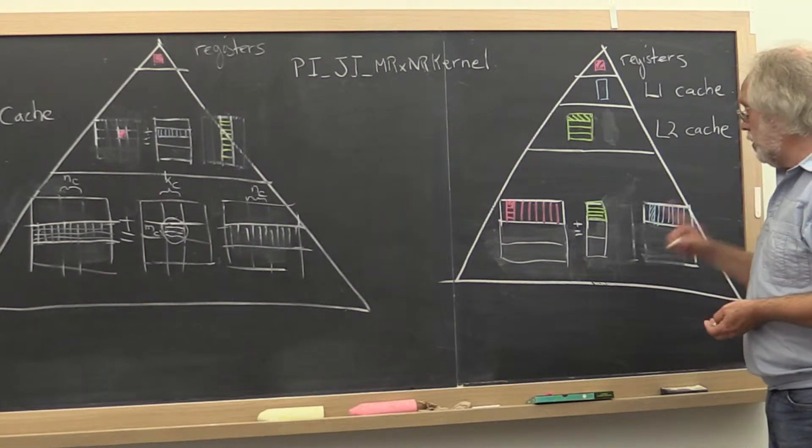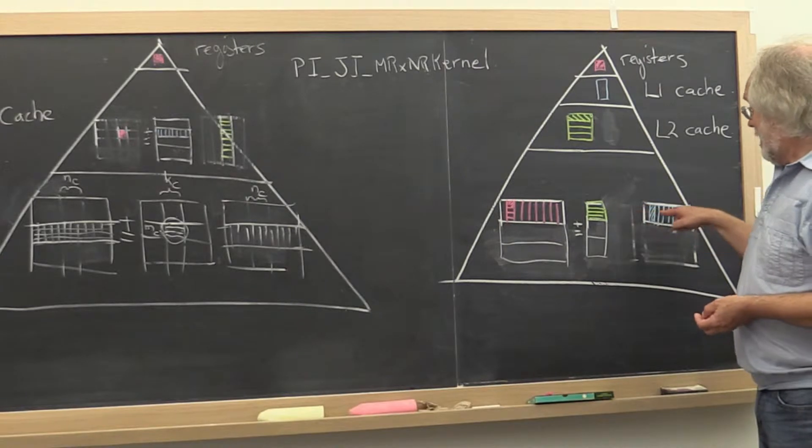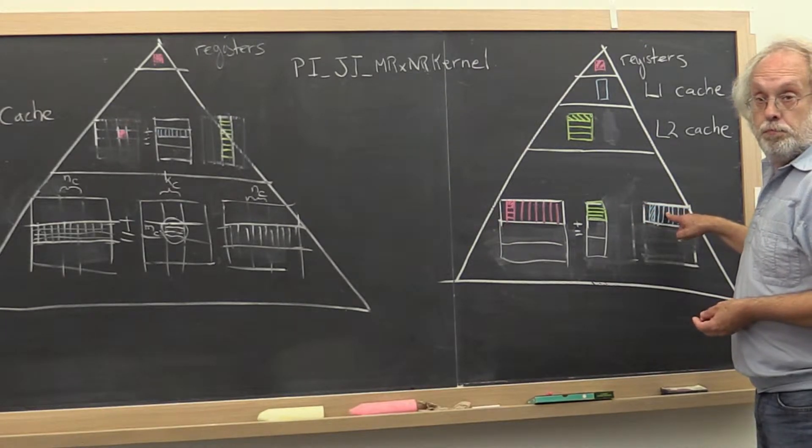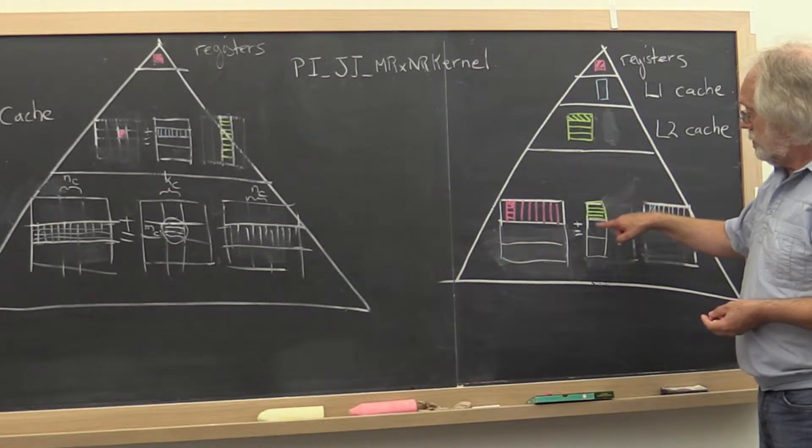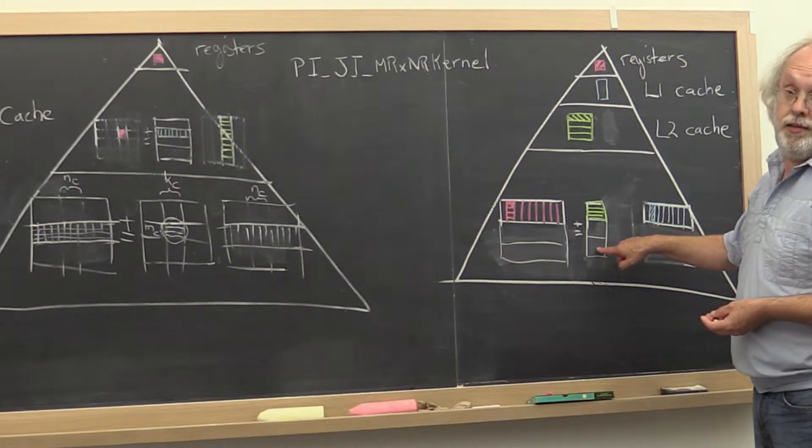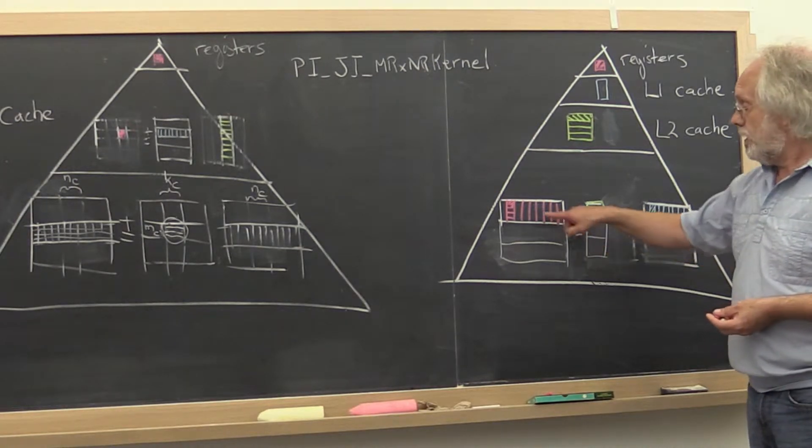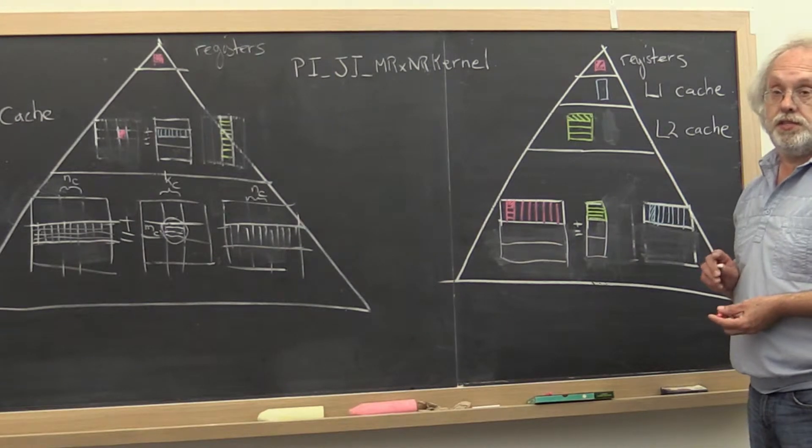What you notice is that this same row panel of B gets reused for multiplication with many blocks of A to update many row panels of C.